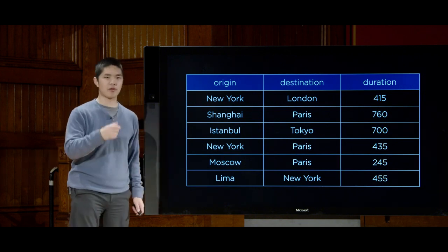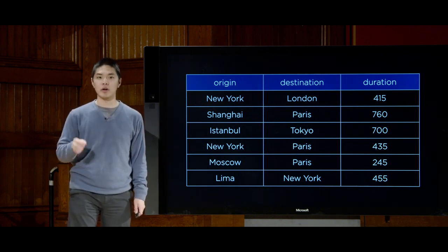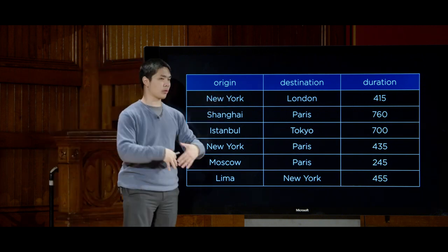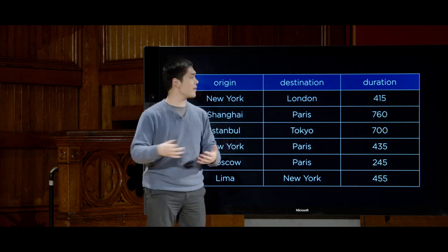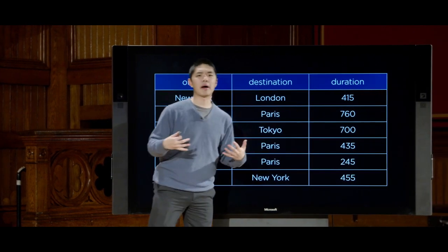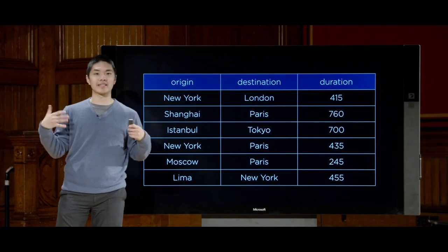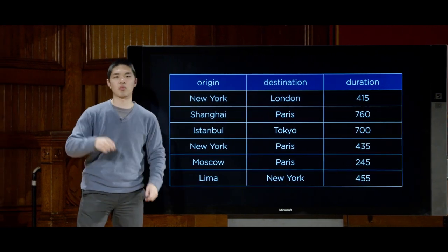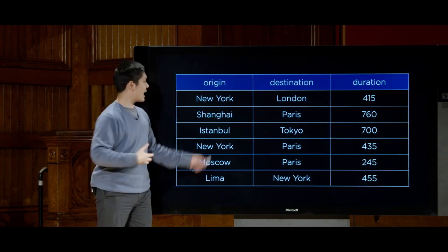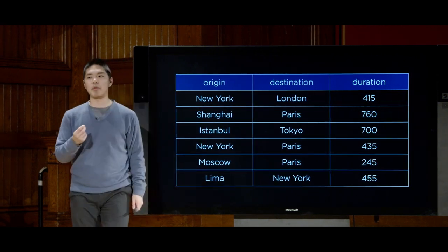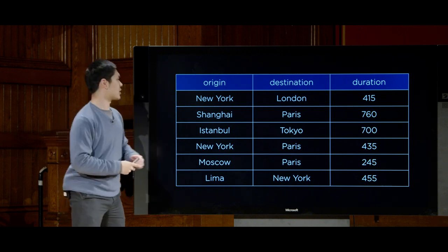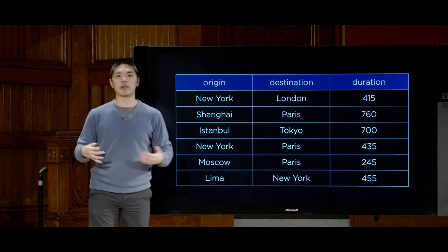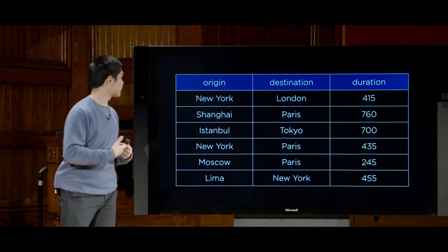Here is a sample table representing flight-related data. There are three columns: origin, what city the flight is leaving from; destination, what city it's arriving at; and duration, a value in minutes for how long the flight takes. Each column represents one field to track, and each row represents an individual flight. For example, one row represents a flight from New York to London taking 415 minutes.